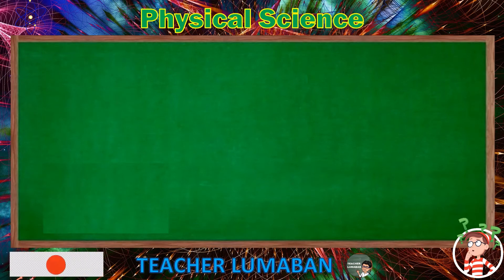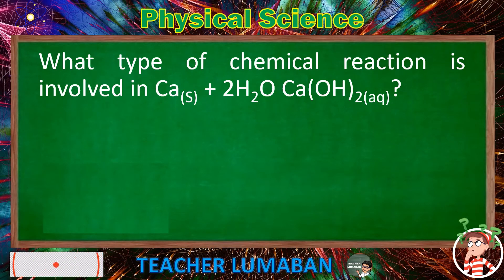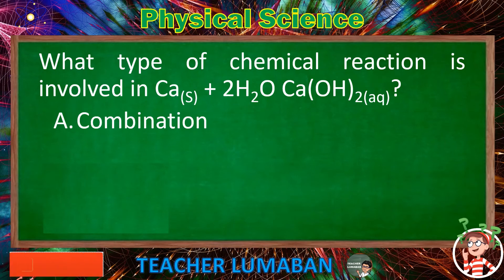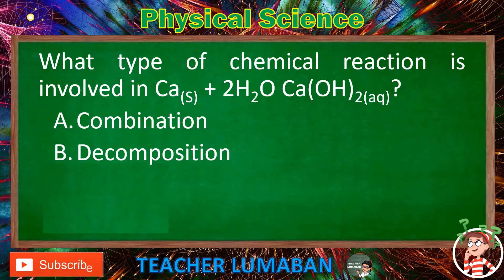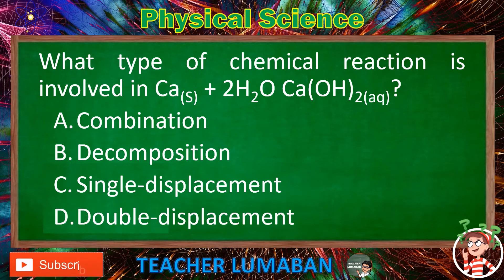What type of chemical reaction is involved in Ca(S) + 2H₂O → Ca(OH)₂(aq)? Letter A: combination. Letter B: decomposition. Letter C: single displacement. Letter D: double displacement. Choose the suitable answer based on the given choices in 5 seconds.